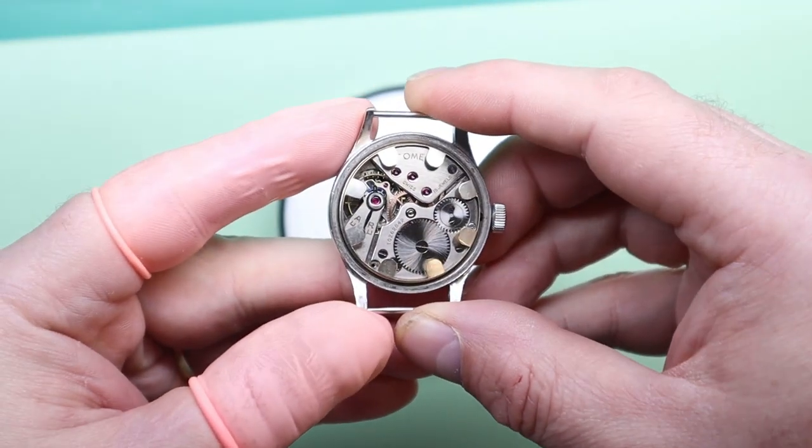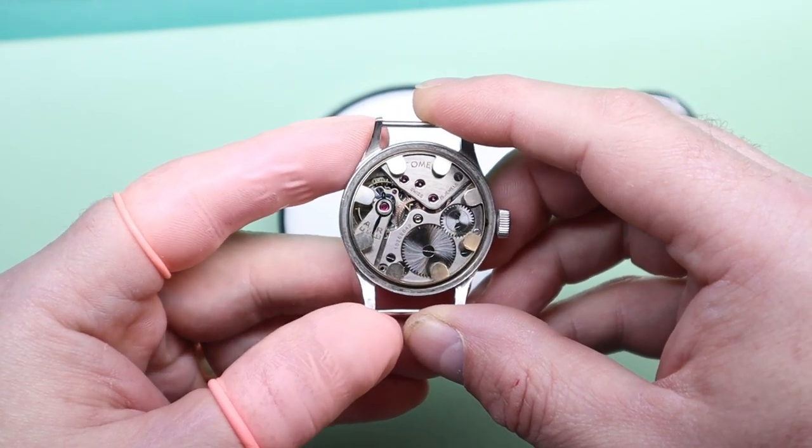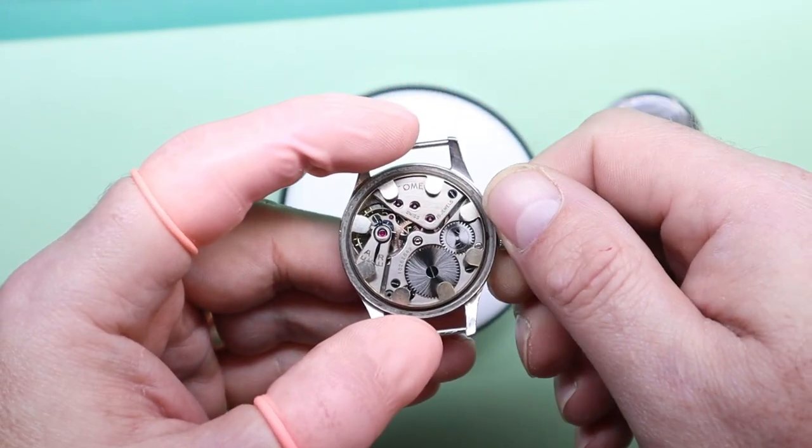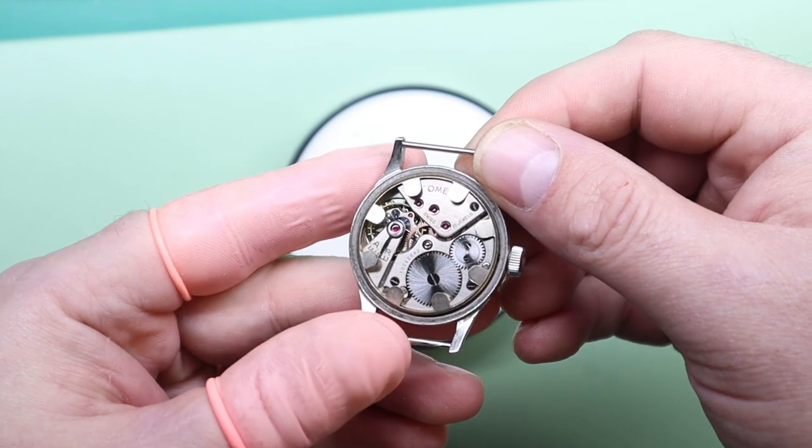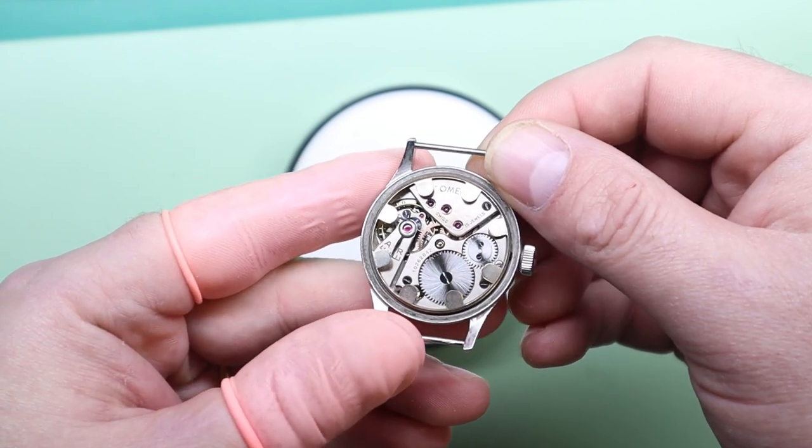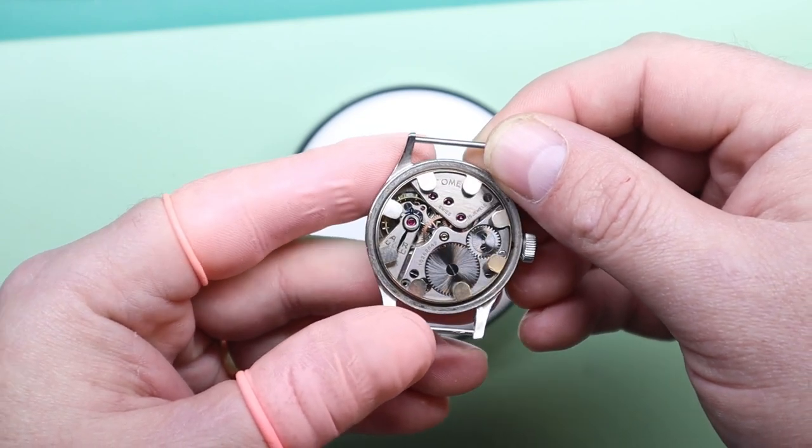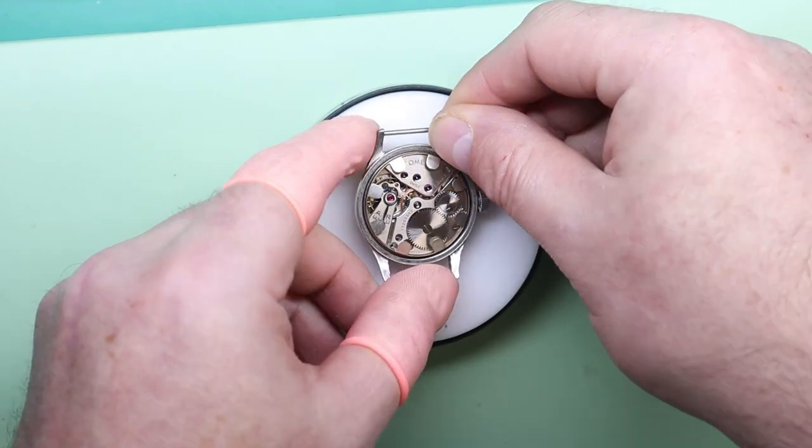Most of Omega's movements are known for their orangey coppery colored plating, but they did a lot of their early movements in a nickel plate, and that's what this one is. It is unfortunately a non-shock protected movement.